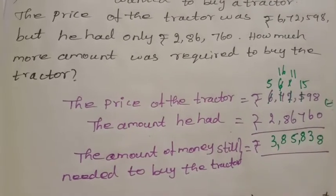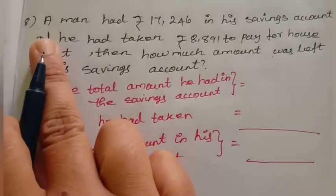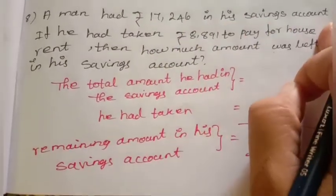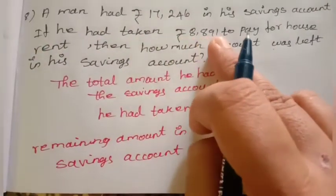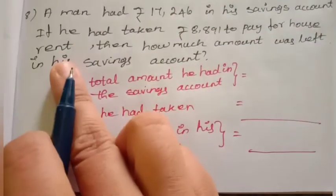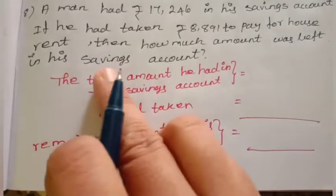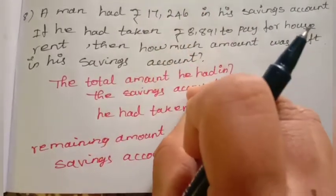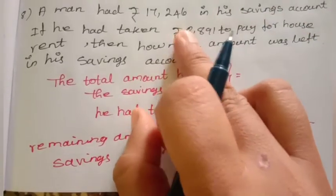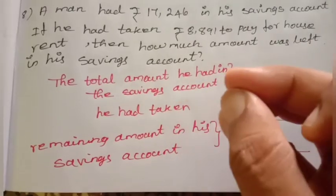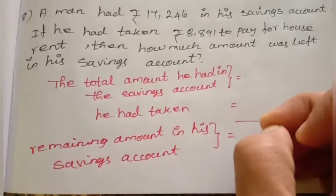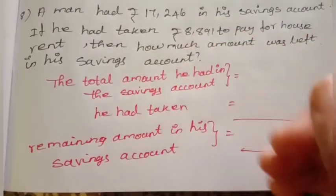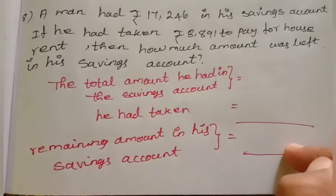The additional amount required to buy the tractor is Rs. 3,85,838. Next question 8: A man had rupees 17,246 in his savings account. If he had taken rupees 8,891 to pay for house rent, how much amount was left in his savings account?